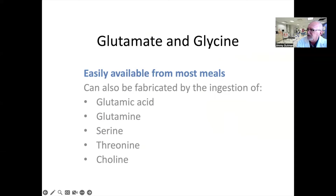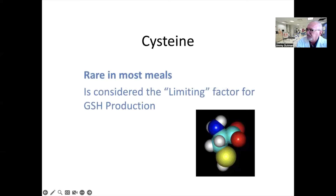Glutamate and glycine are abundant in foods. They are also not essential amino acids, so they can be obtained by eating other amino acids such as glutamic acid, glutamine, serine, threonine, and choline. So obtaining glutamate and glycine is easy. Cysteine, on the other hand, is much rarer in our diet and more difficult to obtain. Not only is it hard to get from regular nutrition, it is also the limiting factor for glutathione synthesis. In other words, glutathione production is a function of cysteine availability.